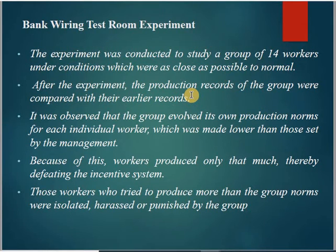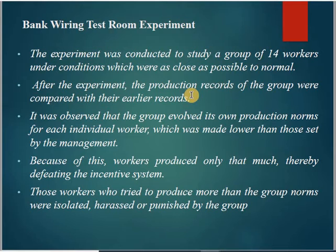The last experiment is the Bank Wiring Test Room Experiment. In this experiment there were some formal conditions. A group of 14 workers worked as close to normal as possible. But after the experiment, the production records were low - they could not achieve the expected production because of certain conditions.